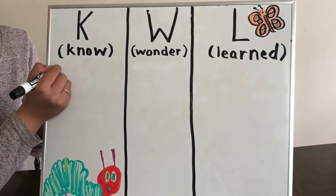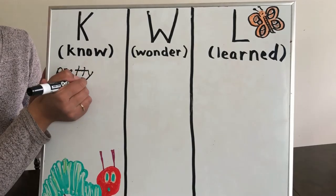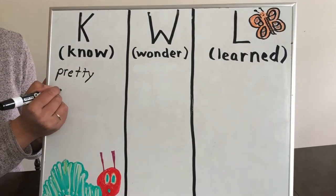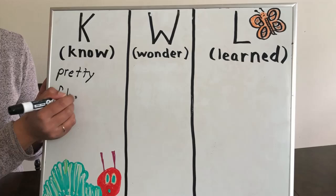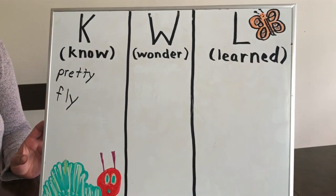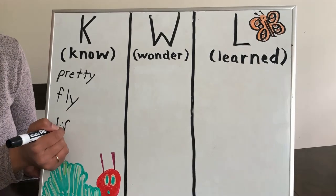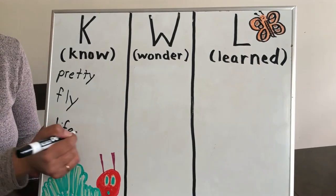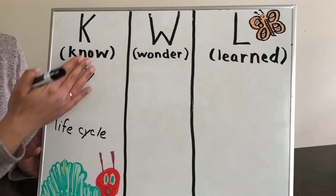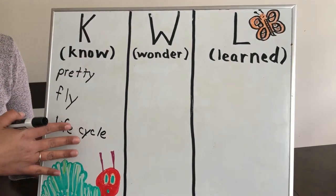I know that butterflies are pretty. I know that butterflies can fly. I know that butterflies have a life cycle. And I could go on and talk about the different parts of that life cycle if I already know them, and I would list that information in the know column.